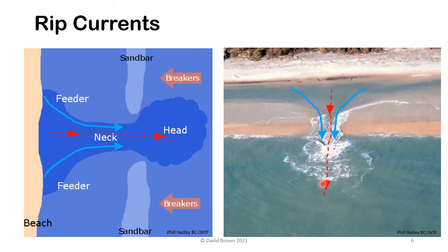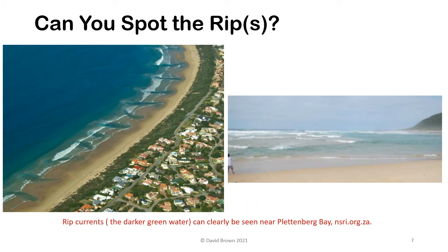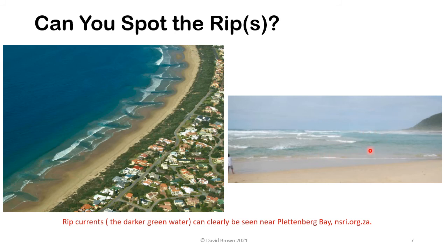When you feel the rip start to slacken, swim or paddle parallel to the shore before heading back in. This slide covers spotting rips. In this aerial picture of a beach we can see quite a lot of rip currents. From the beach it's difficult to get this view, so the best guide is to look for darker green water. You can see the waves and breakers coming in looking quite grey, while the rip current is the dark green colour going out — and there's a patch with no breakers.